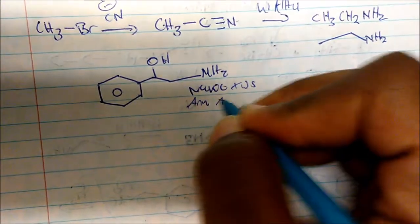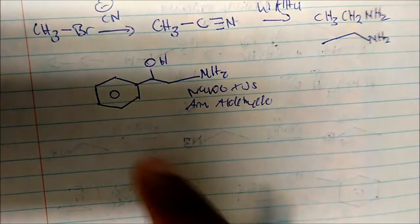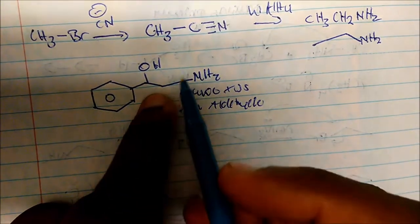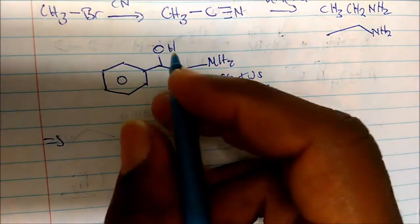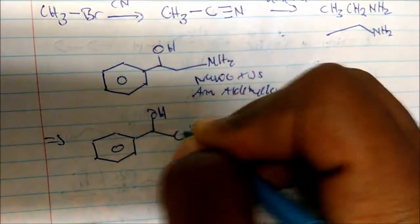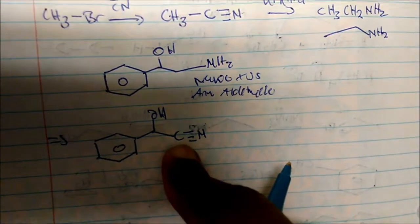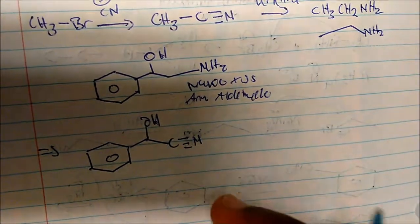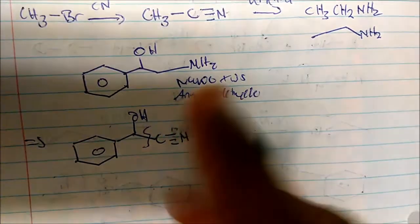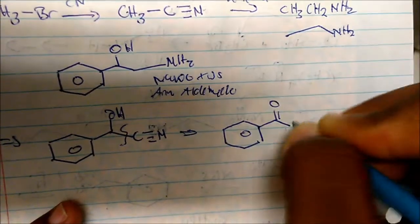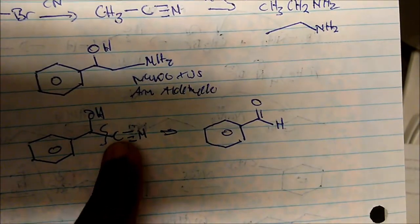Now let's talk about retrosynthesis. Let's say we need to make a target molecule from an aldehyde. Looking at the structure, we can identify an OH group and recognize that this group can come from nitrile chemistry — so we retro-synthesize by disconnecting to reveal a nitrile. Since we need to make it from an aldehyde, breaking this bond tells us it could come from benzaldehyde.